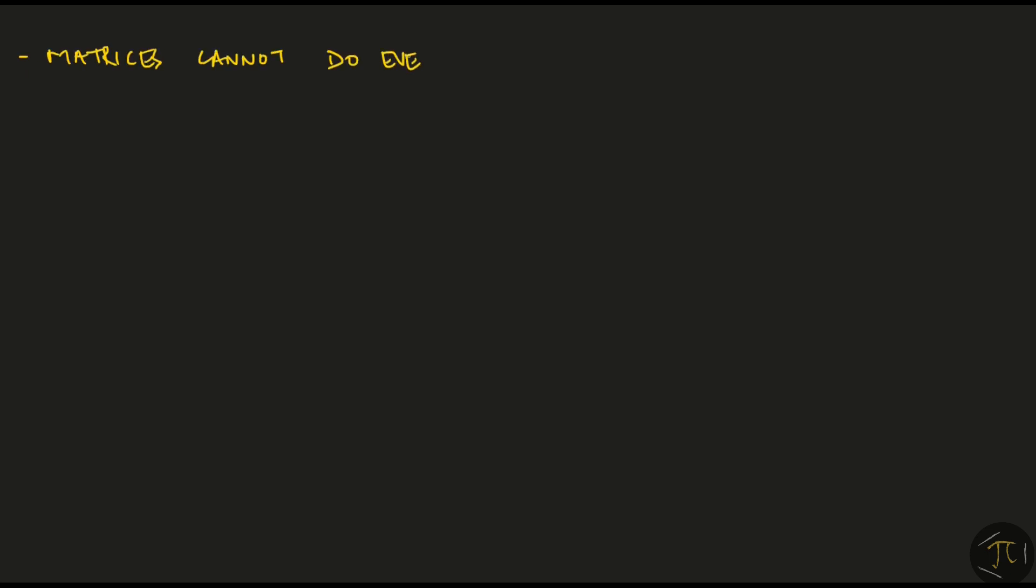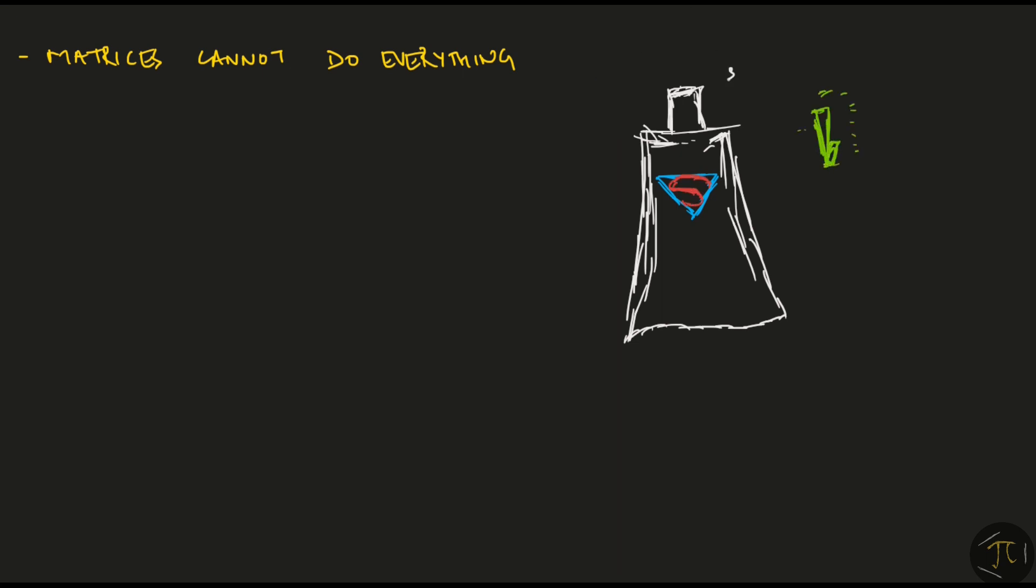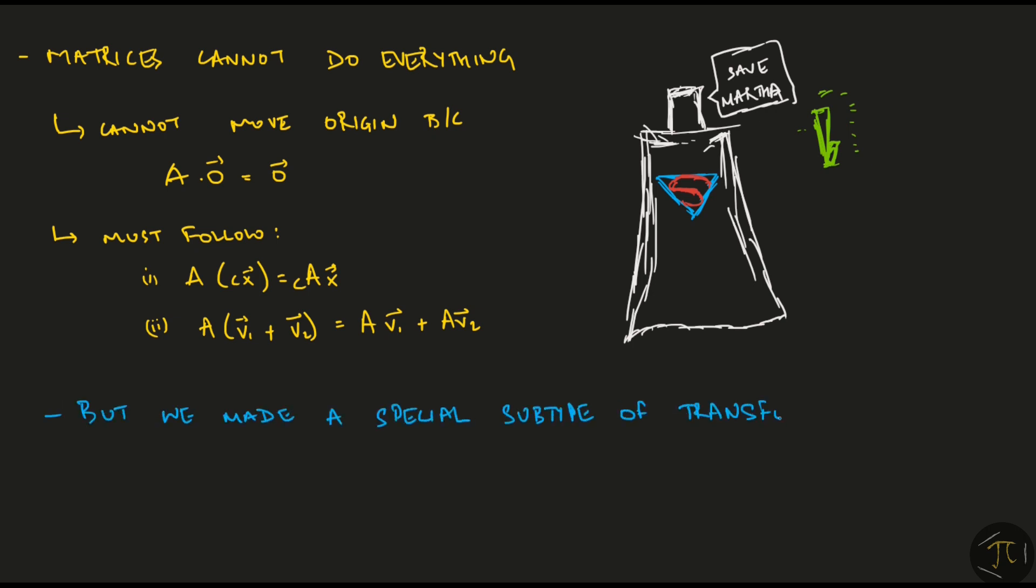But sadly, matrices cannot do everything. We all have our weaknesses. Even superman is not so super before a kryptonite. Matrices cannot move their origin. The zero vector will always give a zero vector when multiplied by a matrix. Also, matrix vector multiplication follows these simple rules. But we purposely made a special subtype of transformation called linear transformations that ensure that matrices work and can be used to represent a transformation.